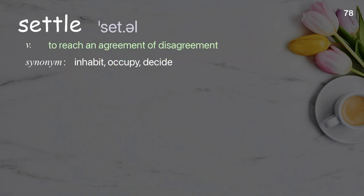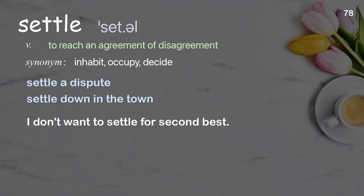Settle: To reach an agreement on a disagreement. Examples: settle a dispute, settle down in the town. I don't want to settle for second best.